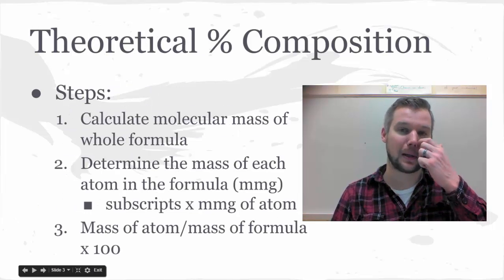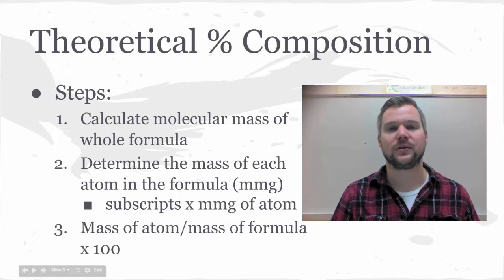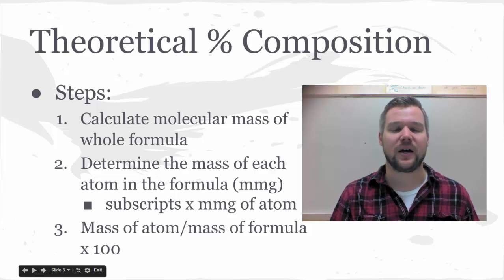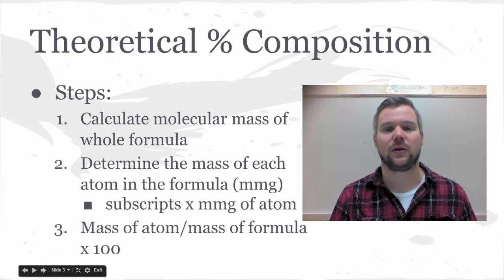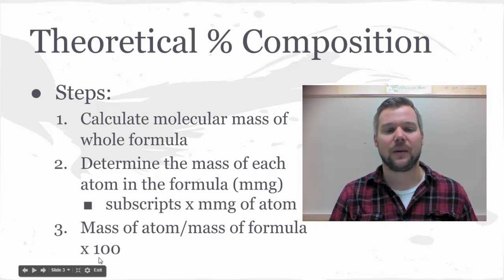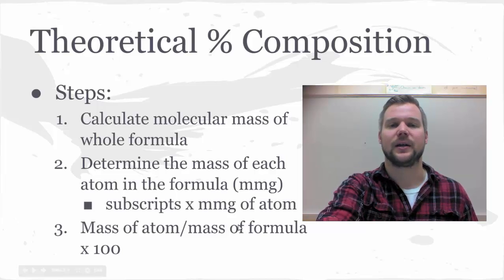So your steps for a theoretical percent composition: you need to calculate the theoretical molar mass using the formula. Then determine the mass of each element. The subscripts multiply by the molar mass in grams of each element, then you take the mass of each element and divide it by the total mass of the formula, multiply by 100 to turn it into a percentage.